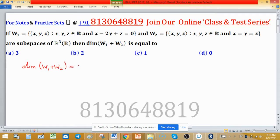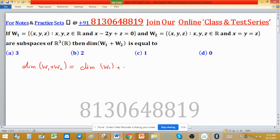Dimension of subspace sum can be found using: dimension of W1 plus dimension of W2 minus dimension of intersection W1 intersection with W2.